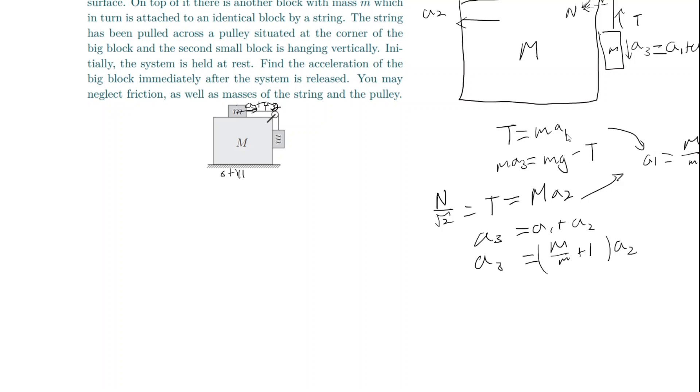And then a sub 3 we can get out of here, but we just need to get one more thing because we don't want a tension in there. So we can take these two equations, and then we have m a sub 3 equals mg minus T. Since T equals m a sub 2, it's mg minus m a sub 2. So a sub 3 equals g minus M over little m a sub 2.